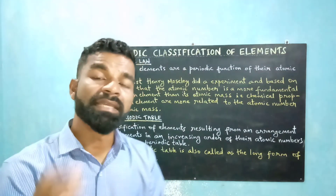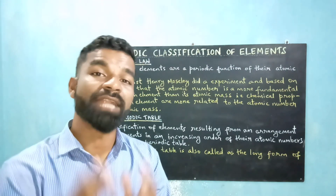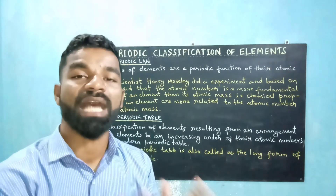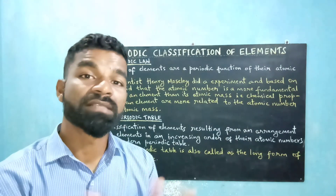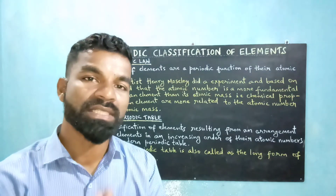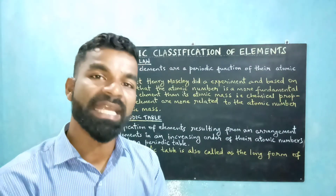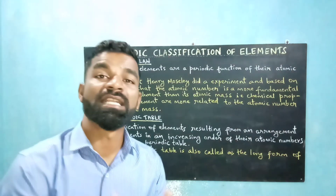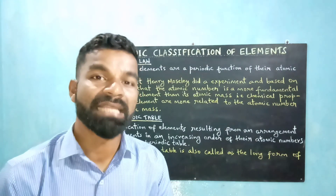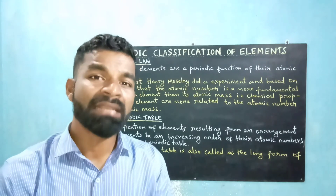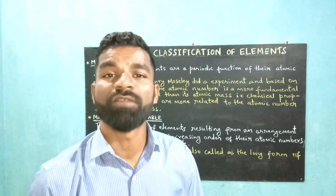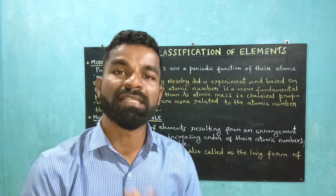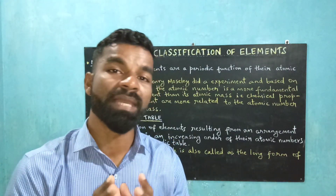In 1913 AD, the English scientist demonstrated that the atomic number of an element corresponds to the positive charge on the nucleus, which is nothing but the number of protons in the nucleus of the atom of that element. This revealed that the atomic number is a more fundamental property of an element than its atomic mass. Accordingly, the modern periodic law was stated: the properties of the elements are a periodic function of their atomic numbers.